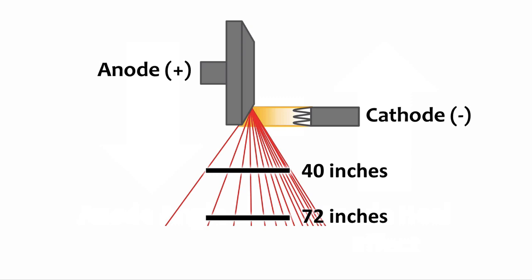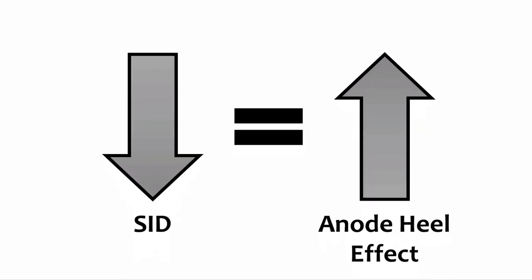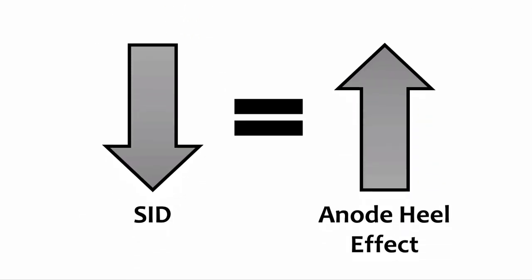Changes in SID also affect the extent of the anode heel effect. Decreasing or shortening the SID increases the heel effect. Shortening the distance causes the receptor to get exposed to more of the low intensity beam on the anode side and more of the high intensity beam on the cathode side, resulting in an increased difference in intensity. The relationship between SID and the heel effect is inverse: as the SID decreases, the anode heel effect increases.